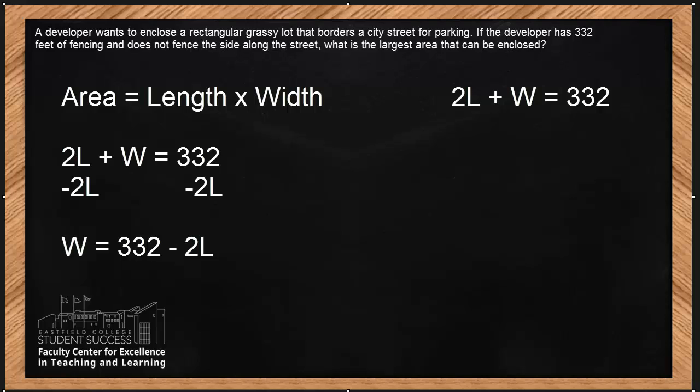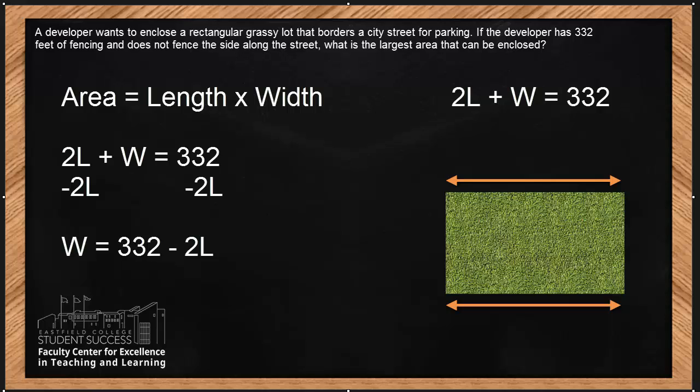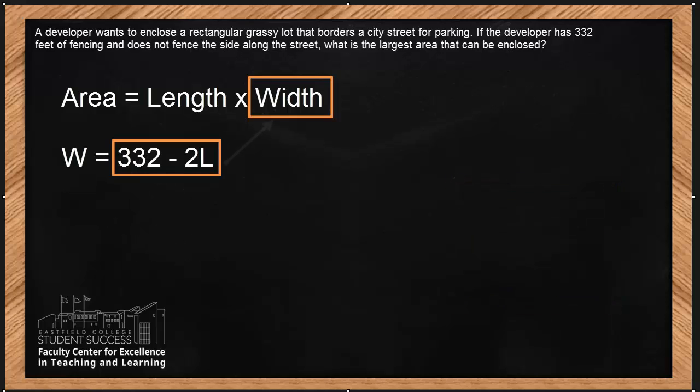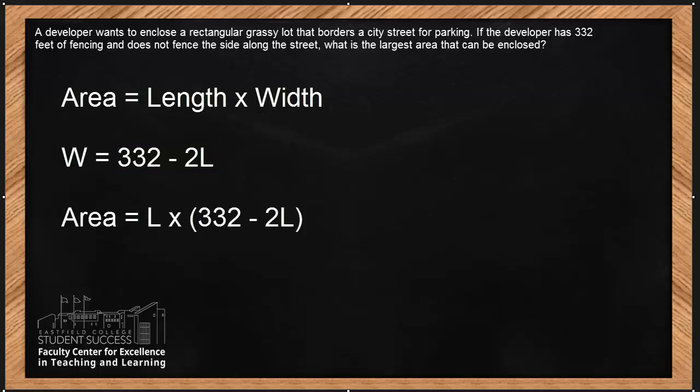But we also know from our diagram, these two L's are the same. The W is our width. So hence, this W and this W, they are the same. I'm going to substitute what I know for W. Area of a rectangle equals the length times our rewritten W, 332 minus 2 times L. Now, notice we wrote this equation in one variable. We're going to distribute. Area of a rectangle now equals length times 332, 332L, length times negative 2 length, negative 2L squared.